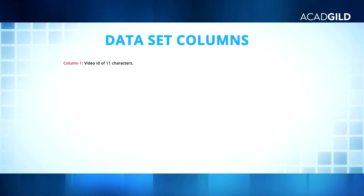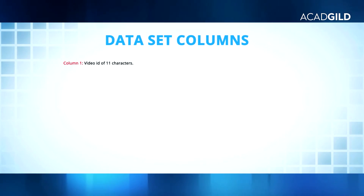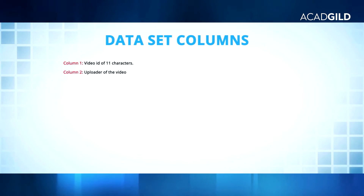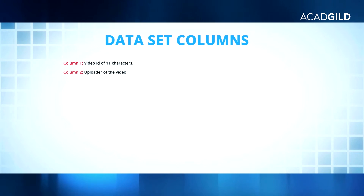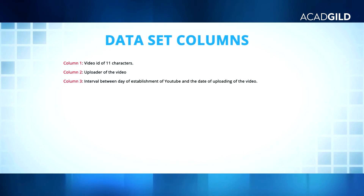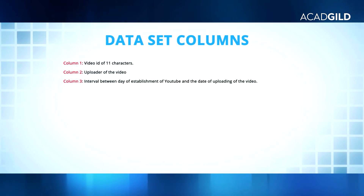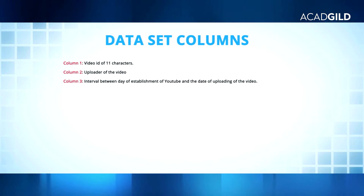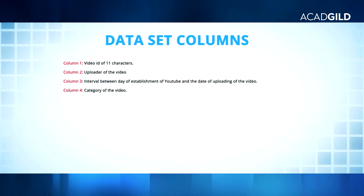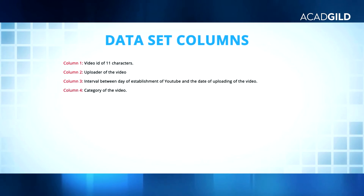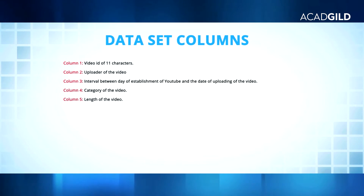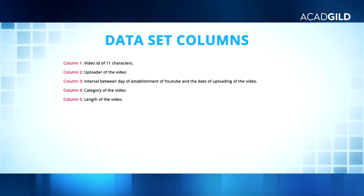The dataset: Column 1 gives the video ID of 11 characters. Column 2 gives information about the uploader of the video. Column 3 gives the number of days between when YouTube was established and the date when the video was uploaded. Column 4 gives information about the category of the video.